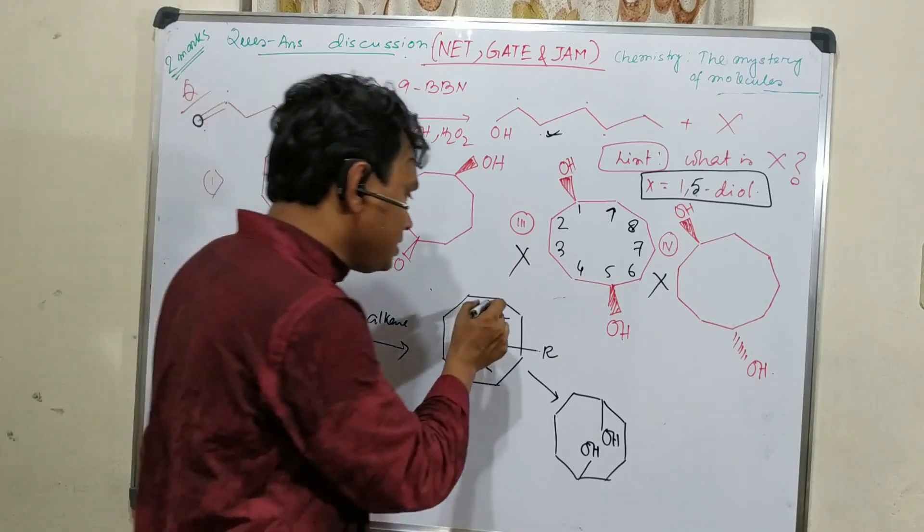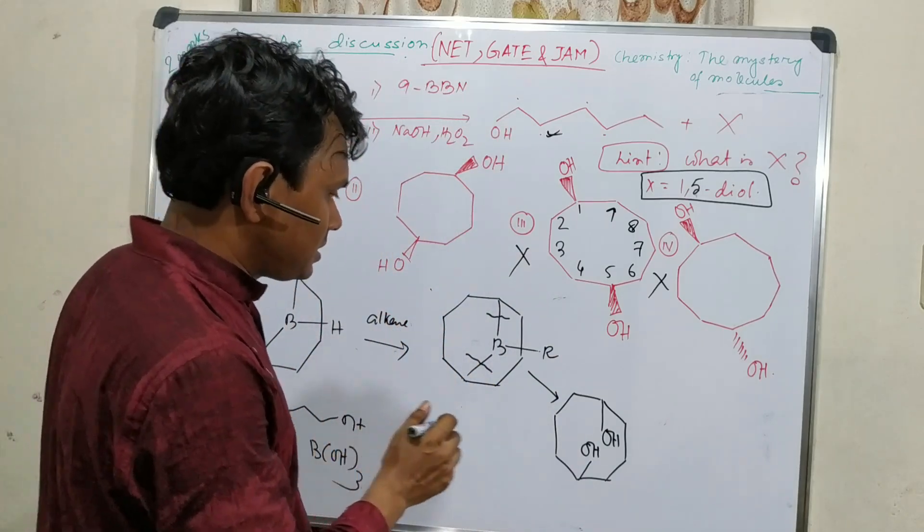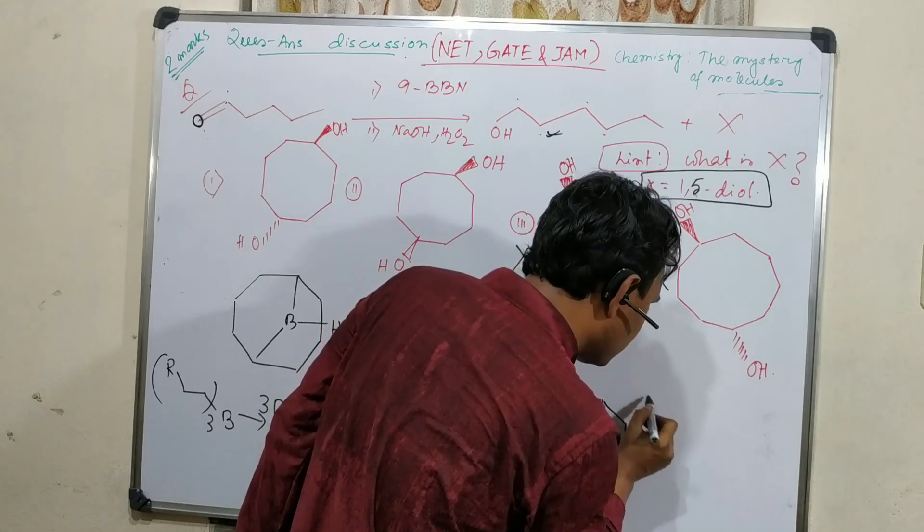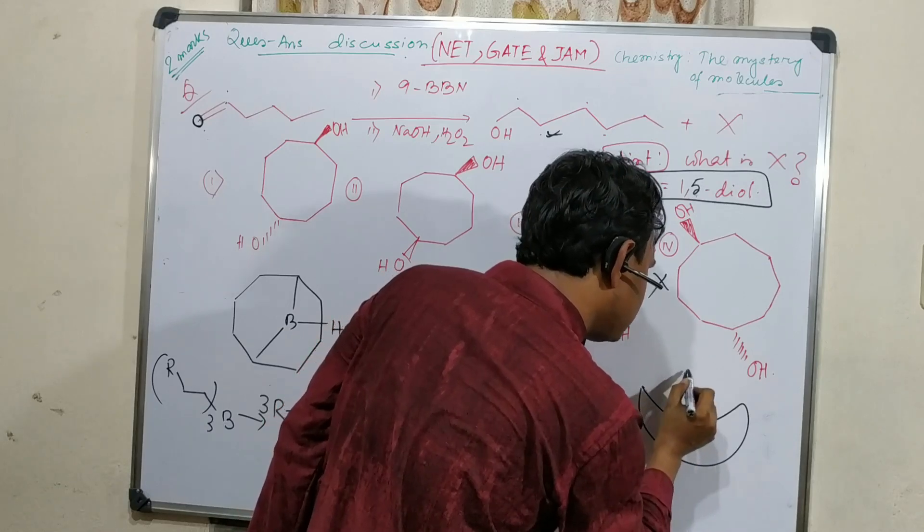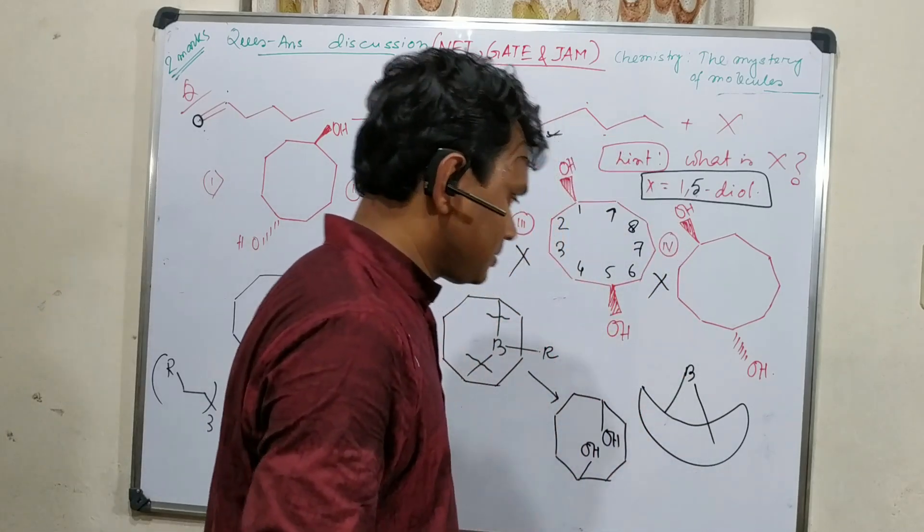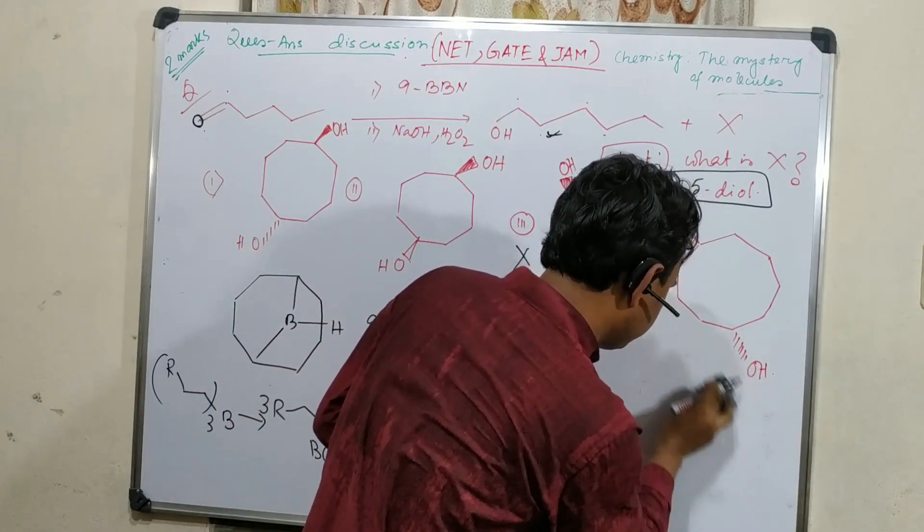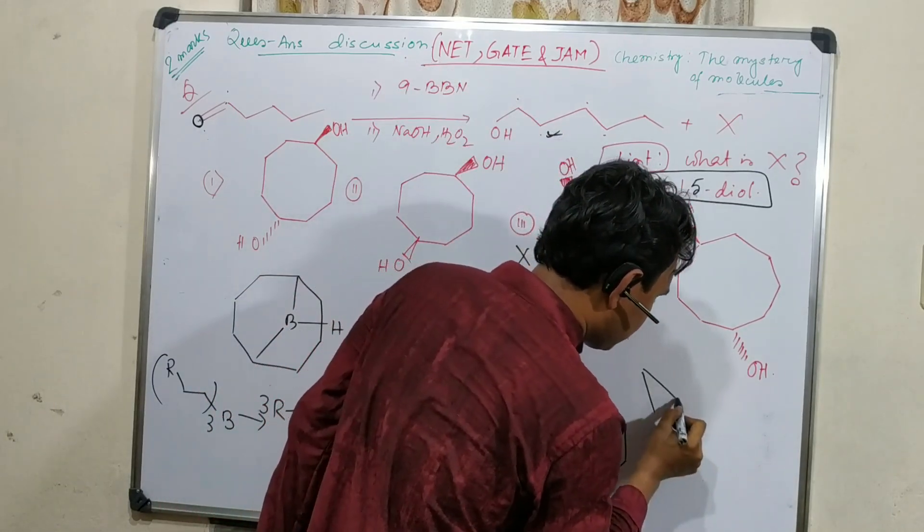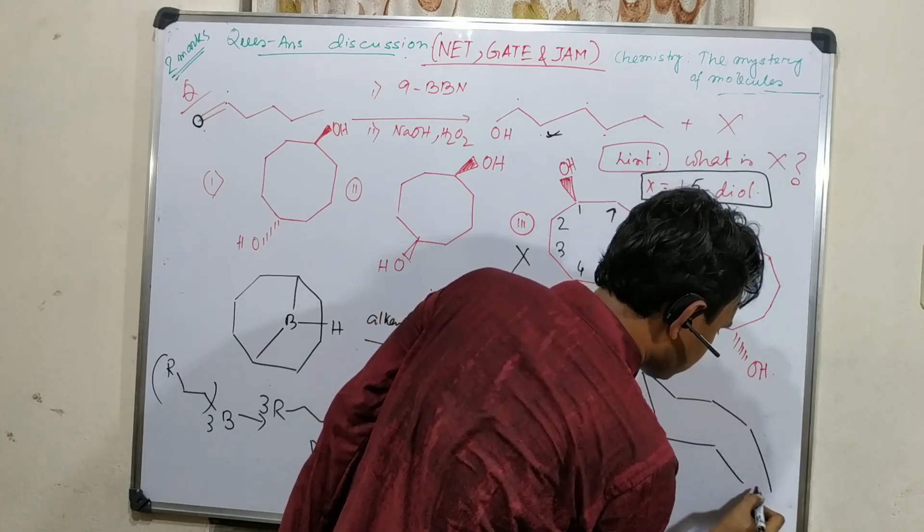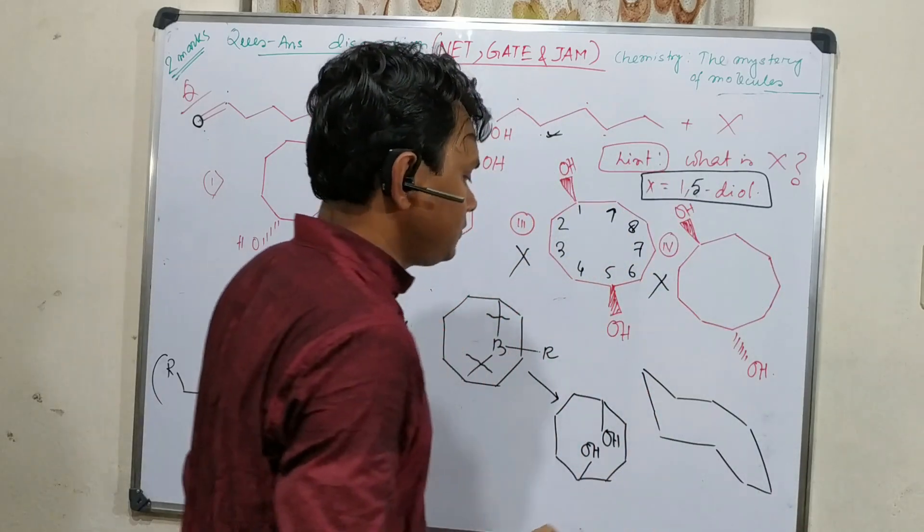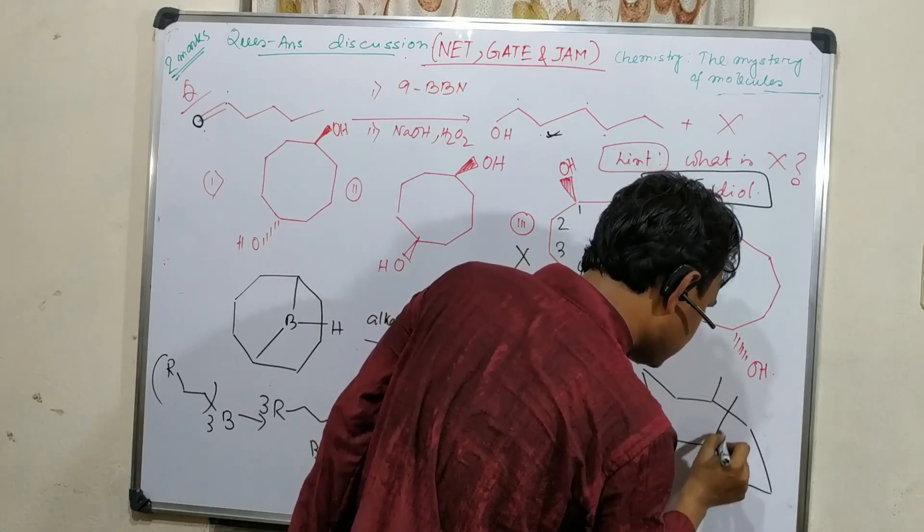And if we consider the ring, the ring generally looks like this. If we draw this reagent, you can see that this 9-BBN looks like this type of structure. If it is trans, like this, with these three groups attached - if it's not cis, for example, if another bond is on this side, will it be possible for the boron to come and attach this side? It is not possible.